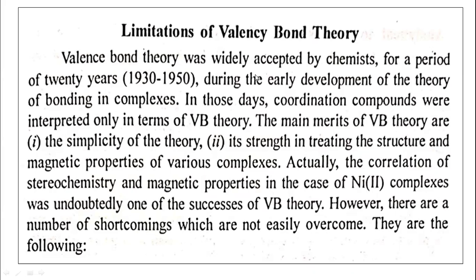There are certain merits and advantages of valence bond theory. First, the theory is very simple — simplicity of the theory. Second, its strength in treating the structure and magnetic properties of various complexes. Valence bond theory satisfactorily explains the magnetic properties: complexes are said to be diamagnetic when all the electrons are paired, and paramagnetic if one or more electrons are unpaired.